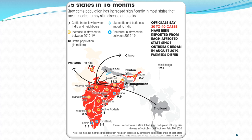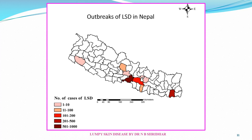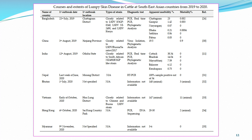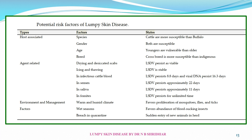This disease affects cattle and also buffaloes. The cattle are more susceptible than buffaloes, and among cattle, crossbred cattle are more susceptible than local cattle. Outbreaks of LSD have been seen in Nepal, Bangladesh, China, India, Bhutan, Vietnam, Hong Kong, and Myanmar.